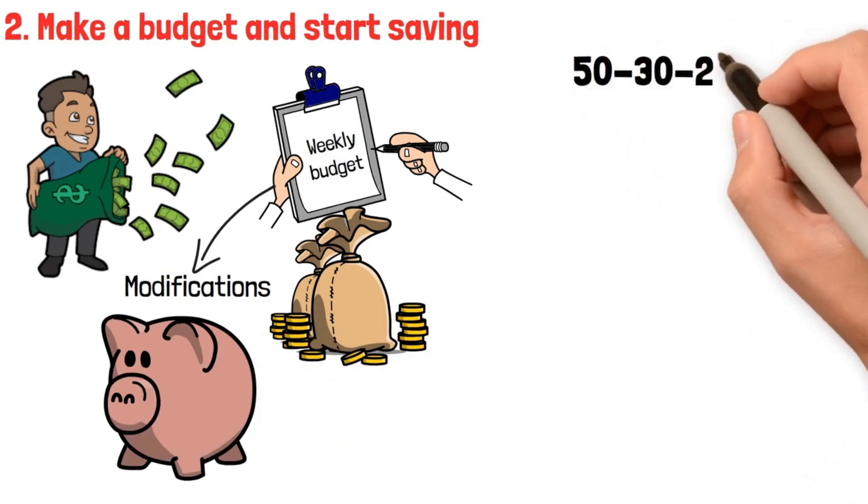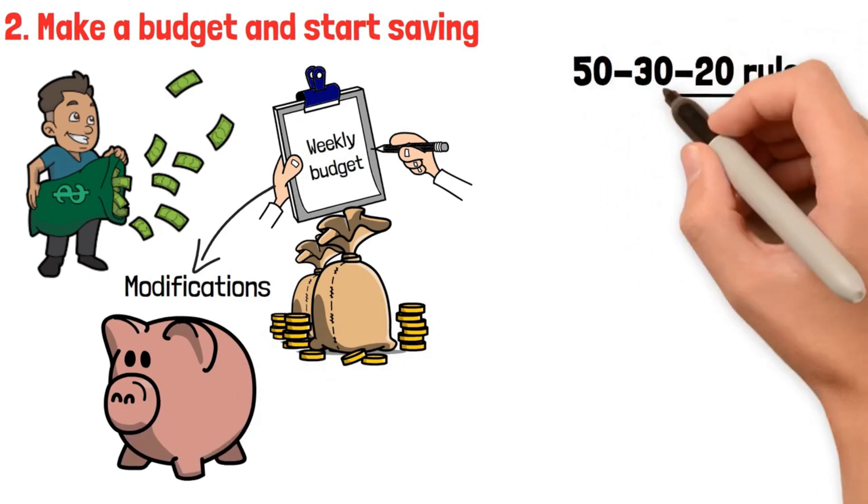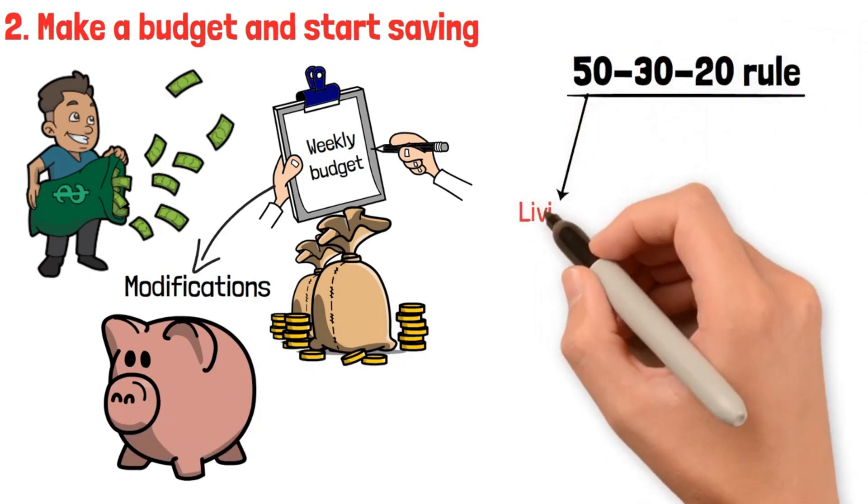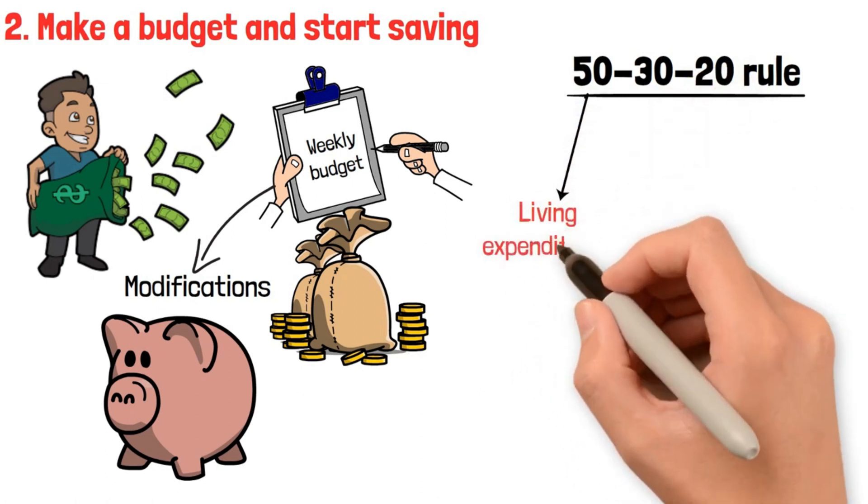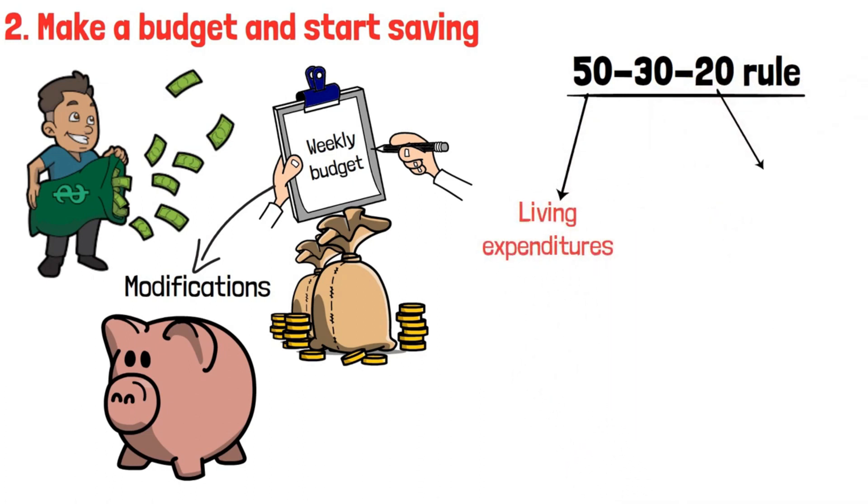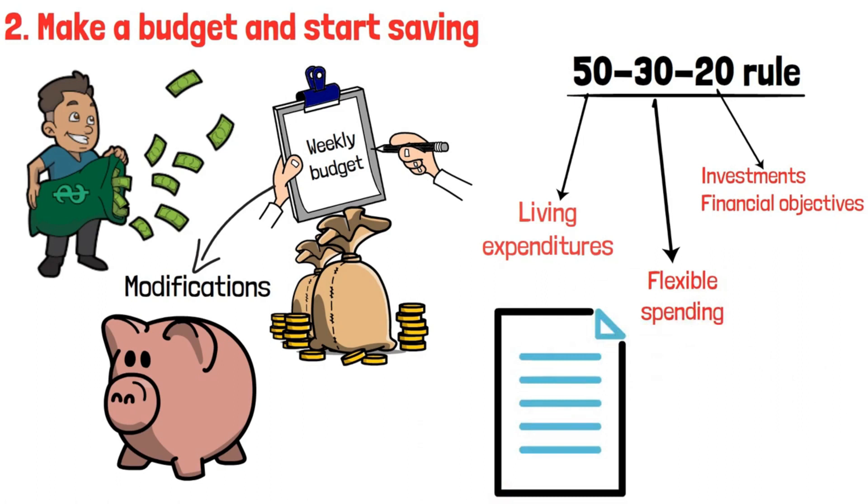When it comes to budgeting, the 50 to 30-20 rule is excellent. It is recommended that 50% of your income be allocated to living expenditures, 20% to investments and financial objectives, and 30% to flexible spending. Adapting this guideline will keep you from overpaying or placing money where it shouldn't be.